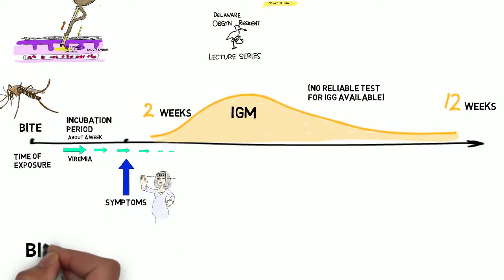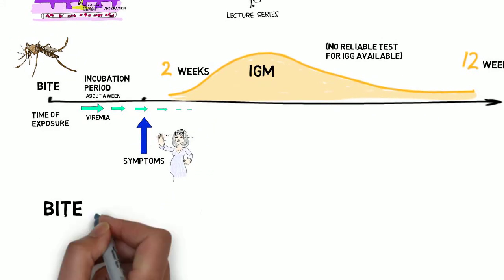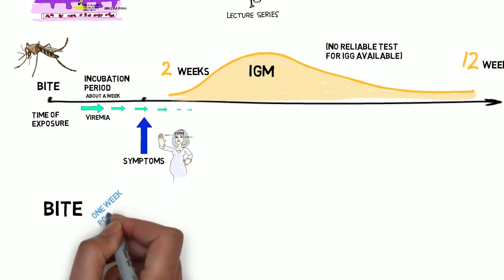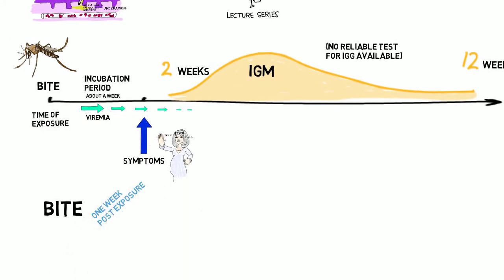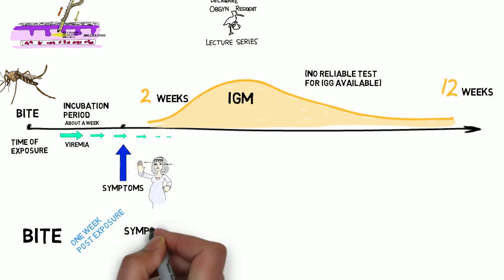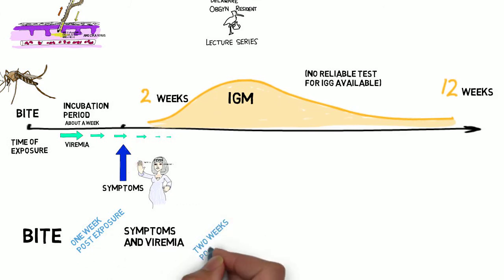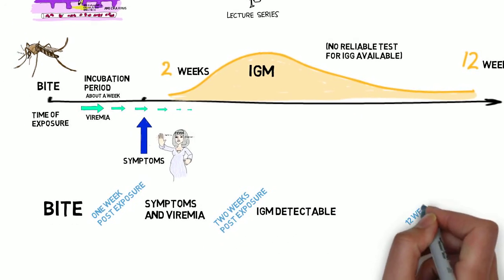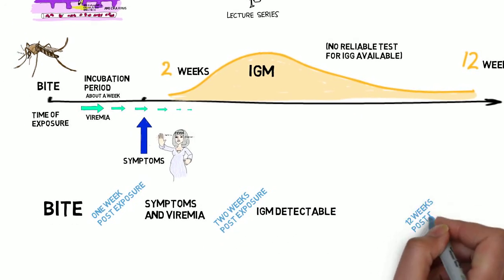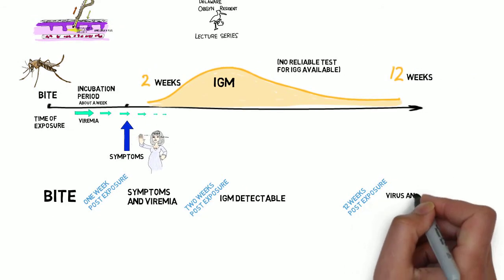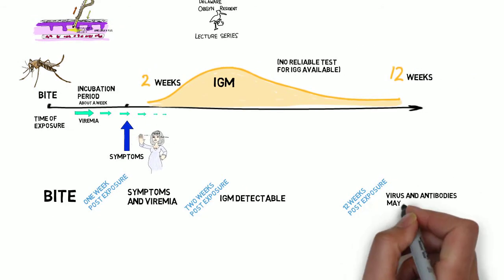Here's the timeline: exposure or bite, incubation of about a week, symptoms, a viremia right around the illness that is gone by two weeks, and the appearance of IgM about a week or so after the illness that persists about 12 weeks.